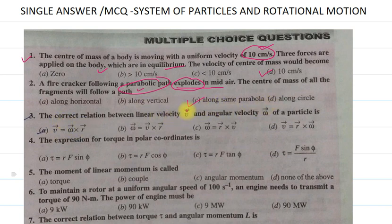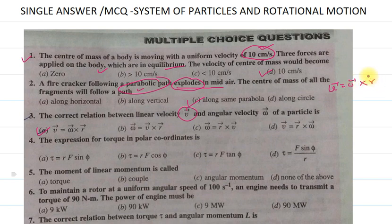The correct relation between the linear velocity and the angular velocity is option A: V vector is equal to omega vector cross r vector. This is the appropriate relation between linear velocity and angular velocity. So A is the answer.